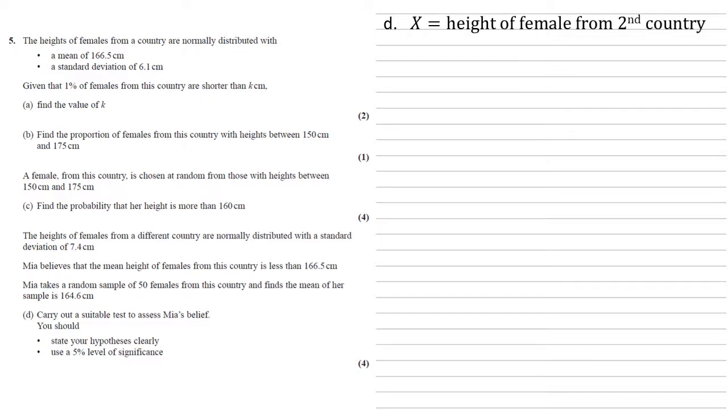So I'm going to let X represent the height of females from the second country. Our null hypothesis is that mu, the mean, is still 166.5 as it was before. And H1 is that mu is less than 166.5, which is what Mia believes it to be.